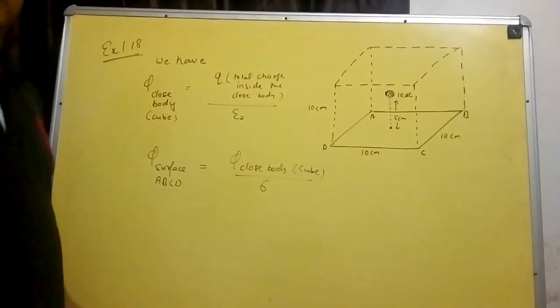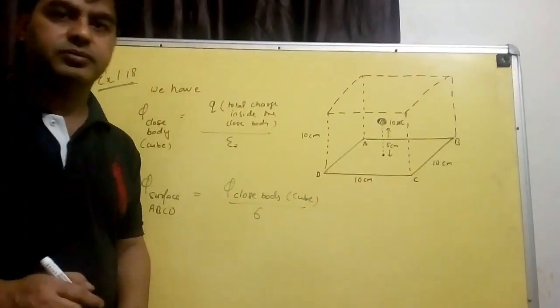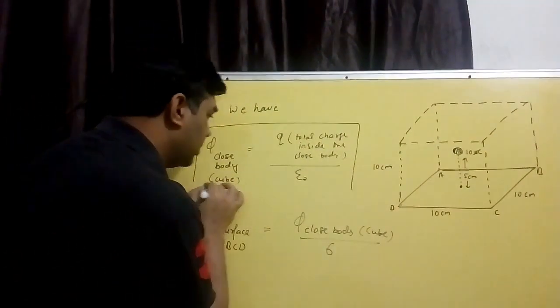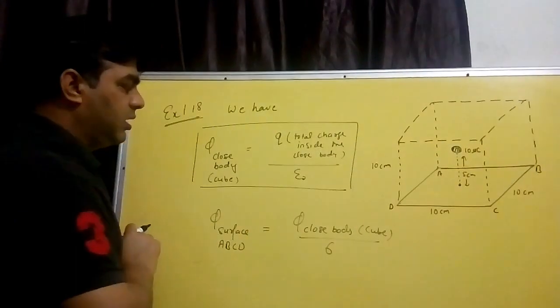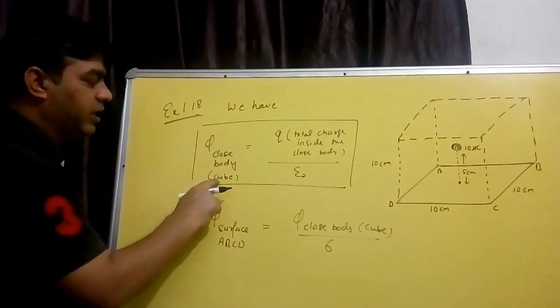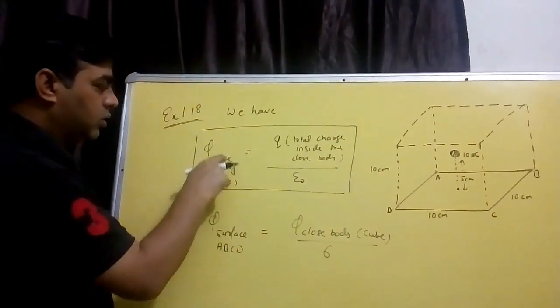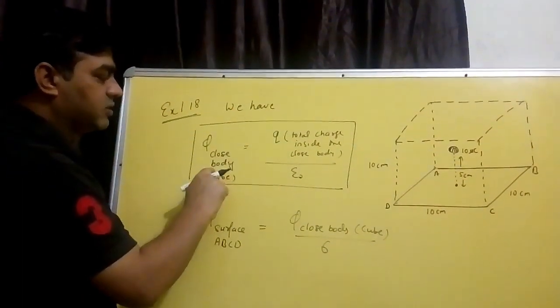One by six. So this is the closed body flux formula, and the closed body of the cube has 6 surfaces.